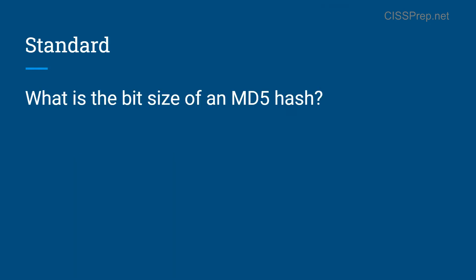Here's an example of a standard question you might get on the exam — and again, you might only get one or two of these. Something like: 'What is the bit size of an MD5 hash?' I don't think it will be worded this easily on the exam; I think it might be a bit trickier, but essentially it's going to ask something like this. It's very simple, something that doesn't require a whole lot of thought. These are basically freebies that you'll get on the exam.